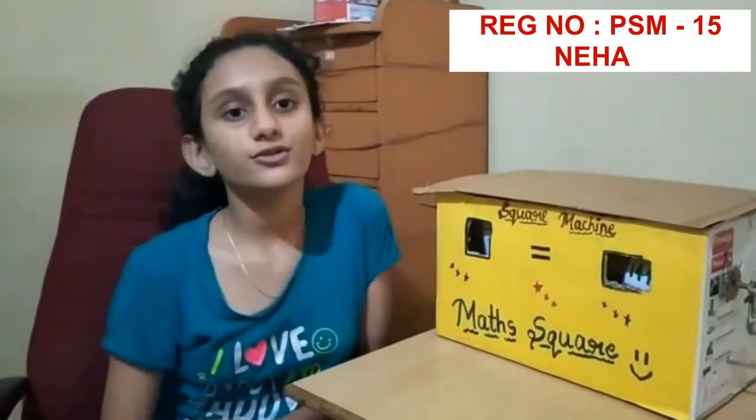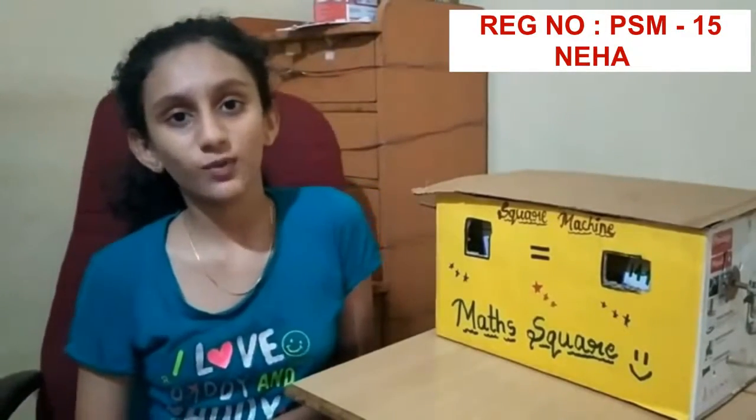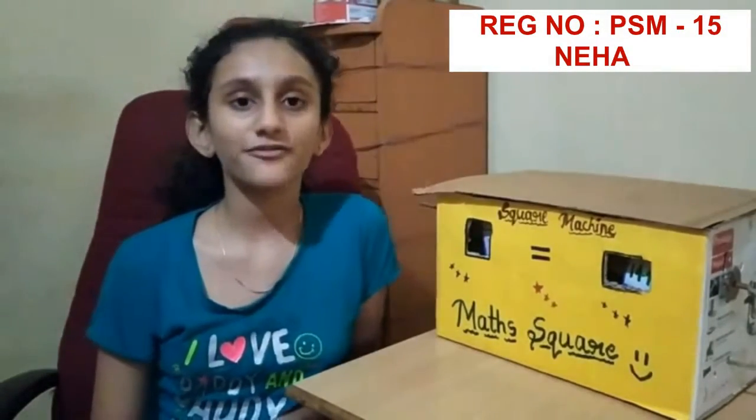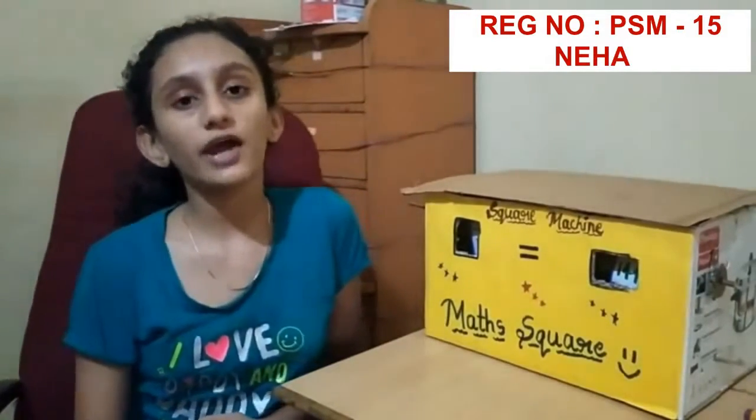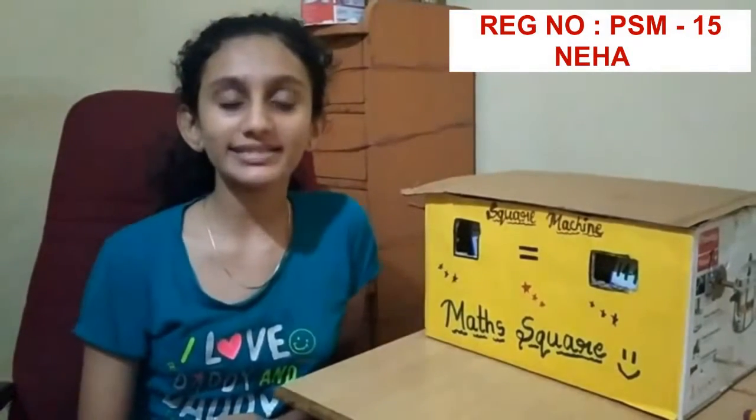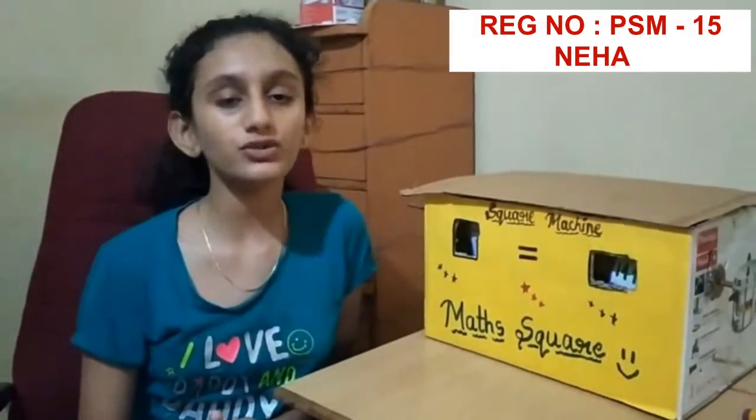For example, 2 square, 3 square, 4 square, 5 square. That means we have to multiply the same number two times.